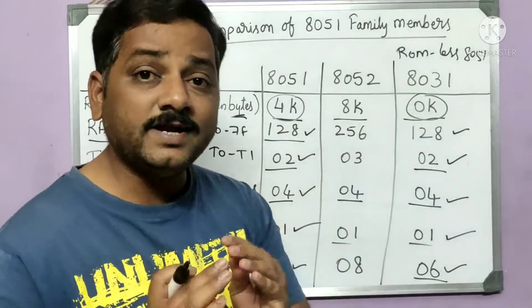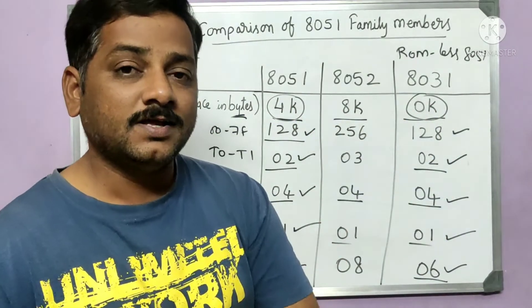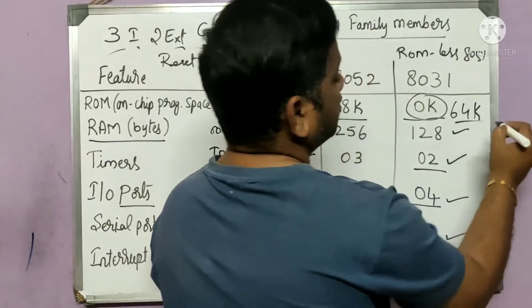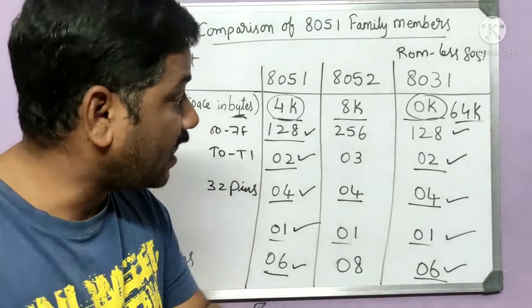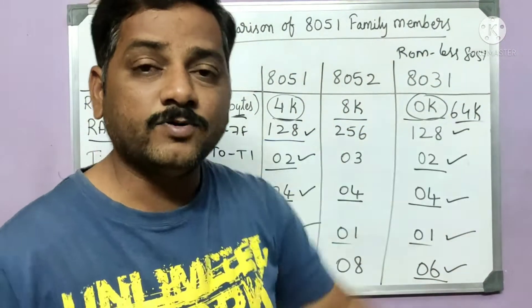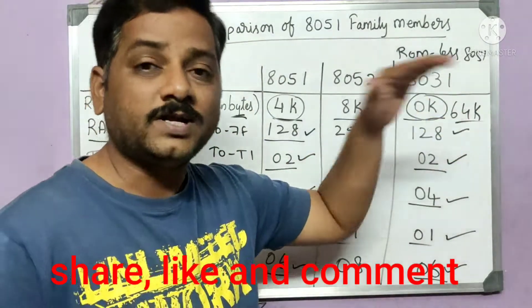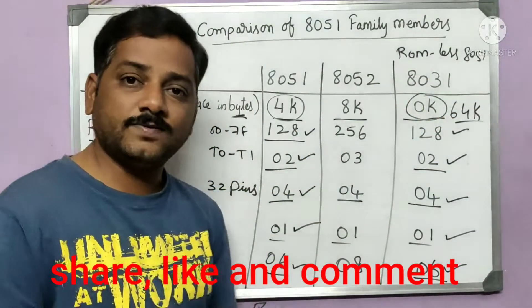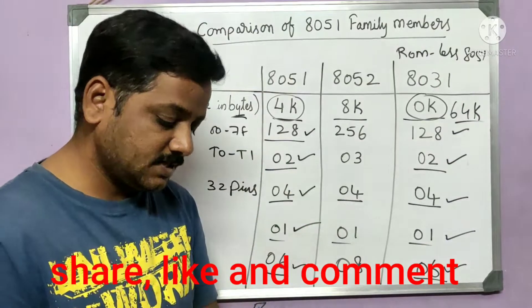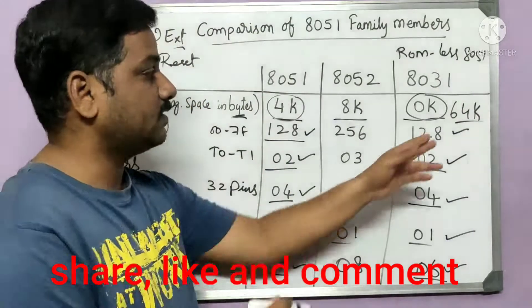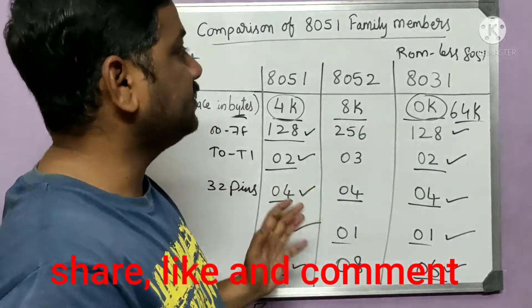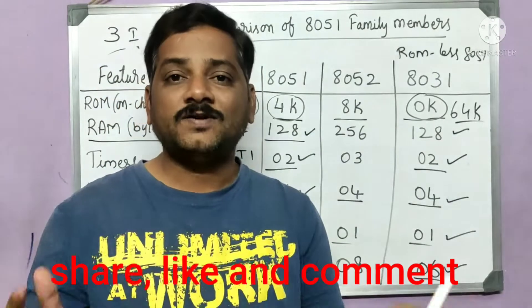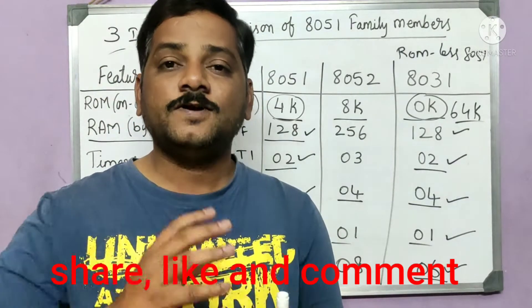One advantage of the 8031 is that while the 8051 has a maximum of 4K ROM, the 8031 can be extended up to 64K of external ROM for writing a program. Each IC has its own advantages, and this is one key advantage of the 8031. I hope this part is clear.